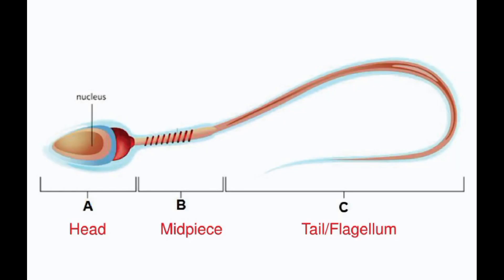In the context of sperm cells, the midpiece is the section that connects the head to the tail. It is made up of several components, including the mitochondria, which provide energy for the sperm to move and swim towards the egg. The midpiece contains many mitochondria packed tightly together, which produce the ATP molecules that fuel the movement of the sperm's tail. It also contains several microtubules, which are part of the sperm cytoskeleton and help maintain the structure of the sperm cell.